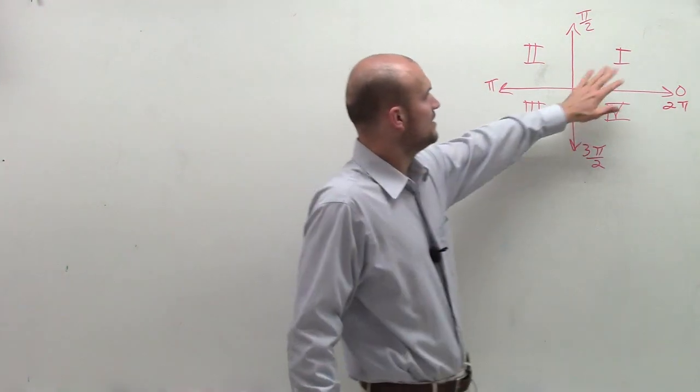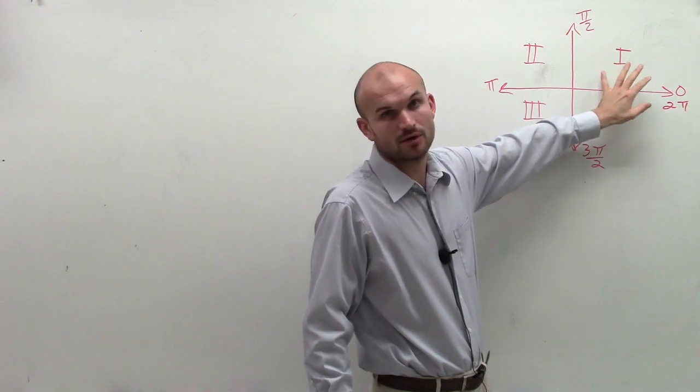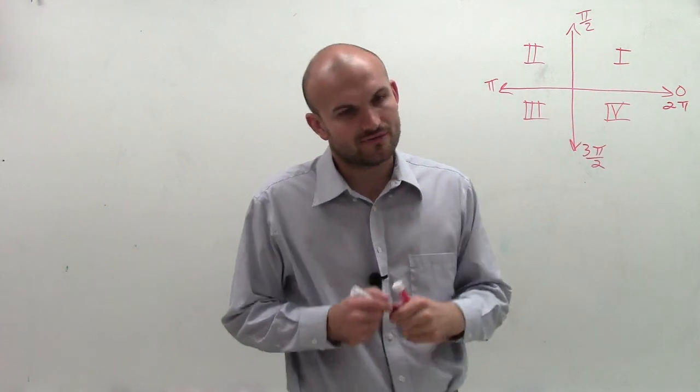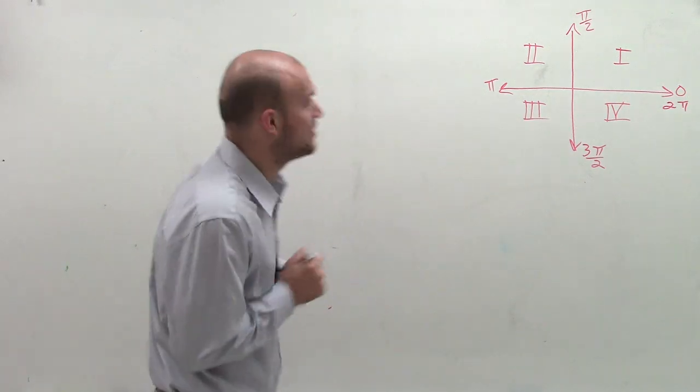So that means as long as our angle, if we create an angle and it's between these two measurements, then it's going to be in quadrant one. So let's take a look at the first one, which I did not write on the board. I have 11π over 8.